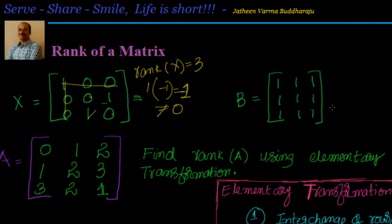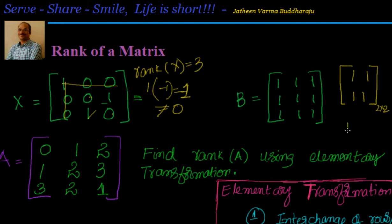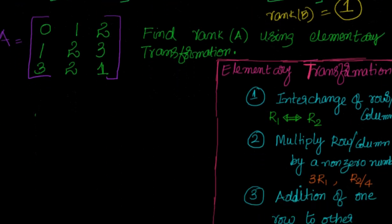Now let's look at example B, where all elements are equal to 1. You should be able to directly say what the rank is without writing a single word. Look at this matrix — all rows are identical, so rank is not equal to 3. If you remove one row or column to get a 2x2 sub-matrix, all elements are still 1, so the determinant is 1×1 minus 1×1 = 0. Therefore the rank of B is equal to 1.